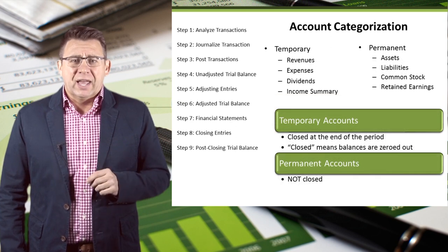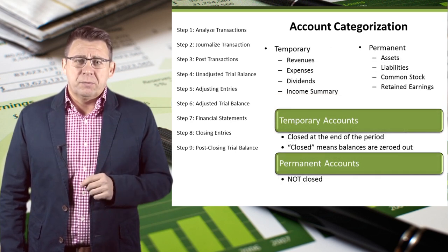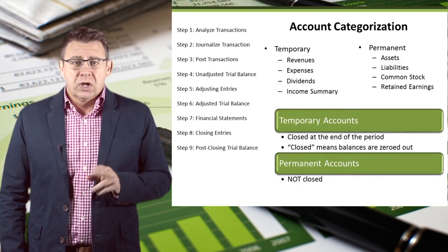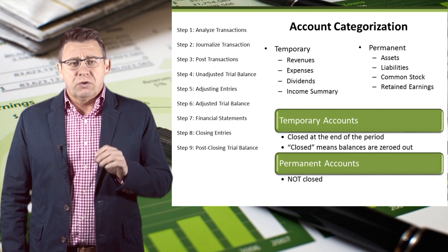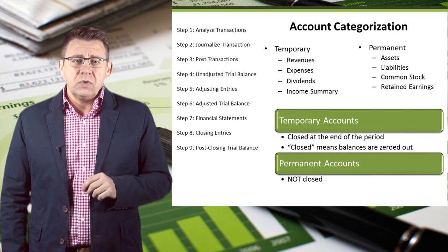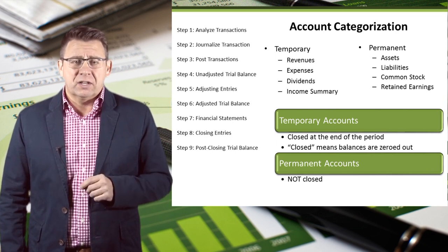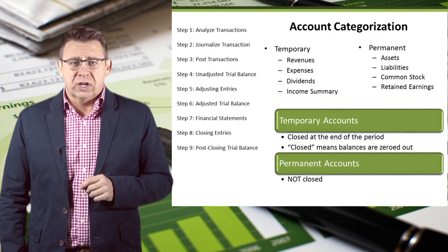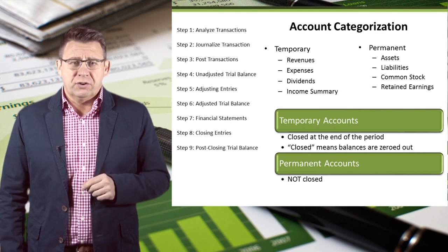Temporary accounts are closed at the end of the period. Closed means to zero the account balance. Permanent accounts are unaffected by the closing journal entries, with the exception of retained earnings.